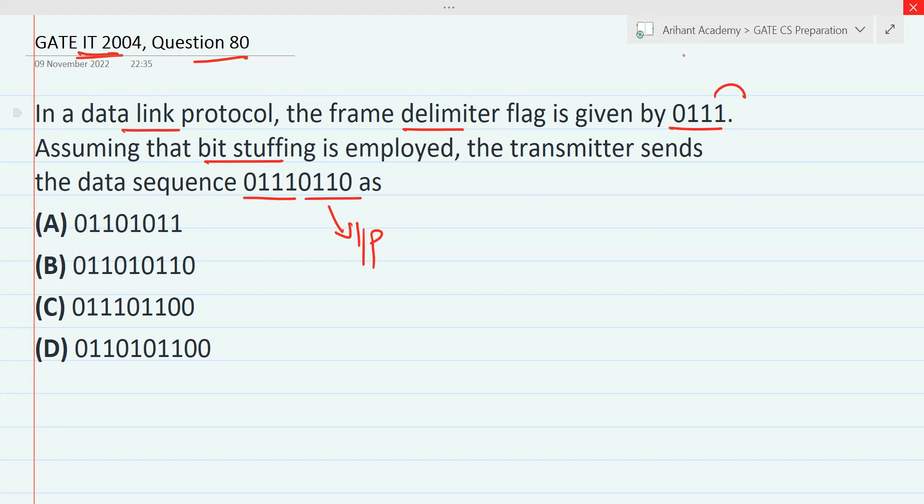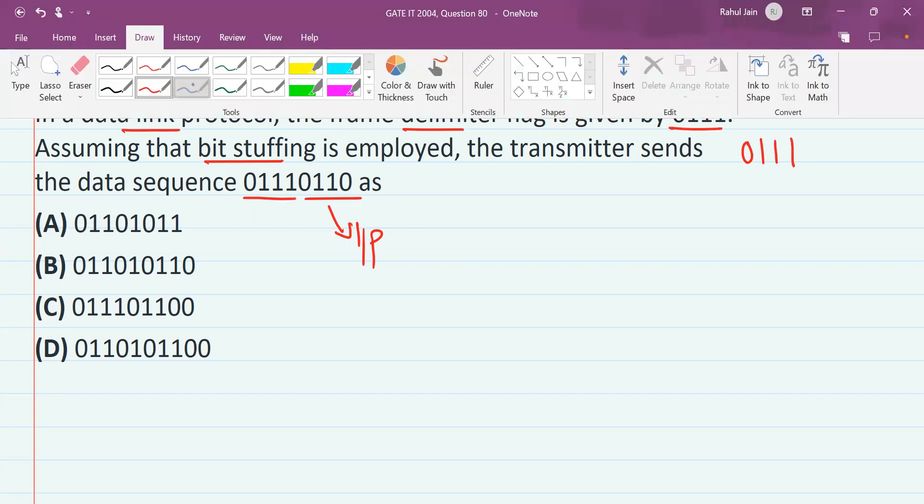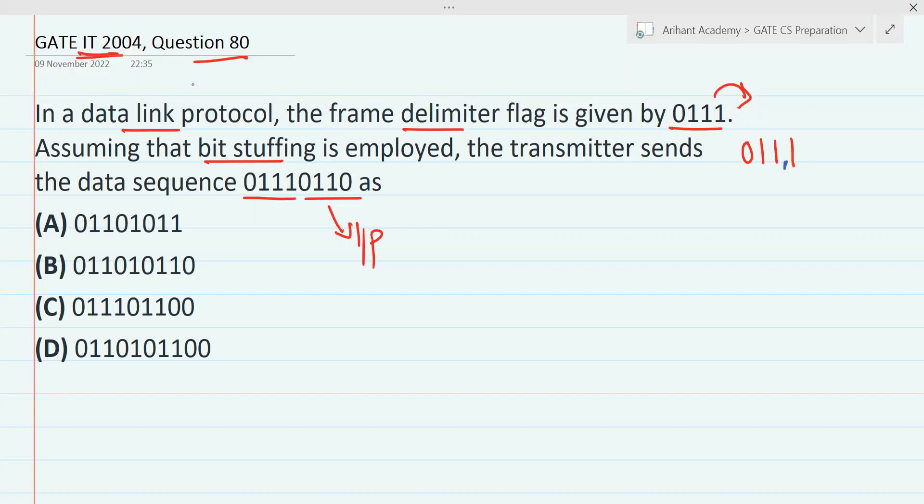And this is our frame delimiter. So you know if we are having continuous three ones in the frame delimiter, it means that to avoid confusion in the data we are going to add a zero bit after two ones. We need to add zeros here. This is the concept of bit stuffing - just before the last one we need to add a zero bit.